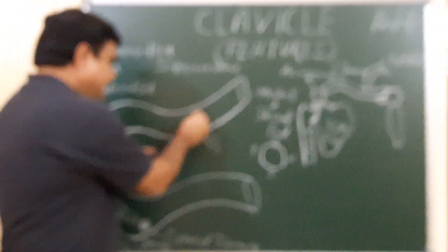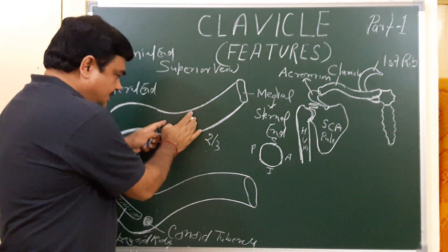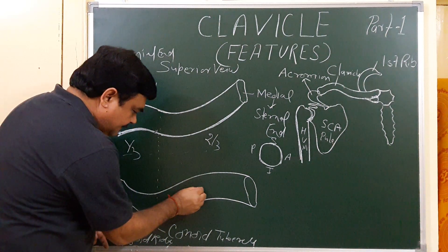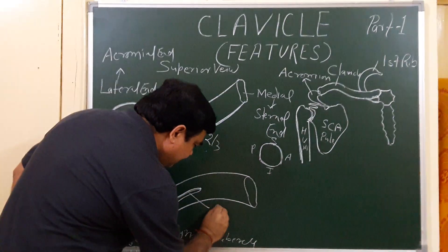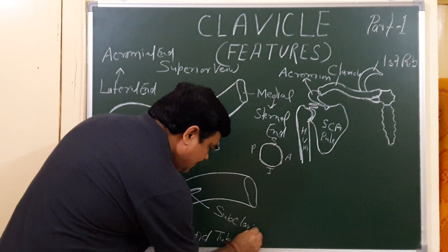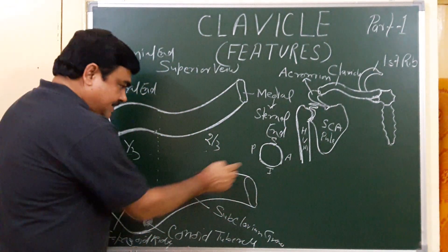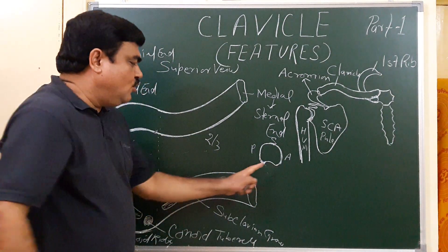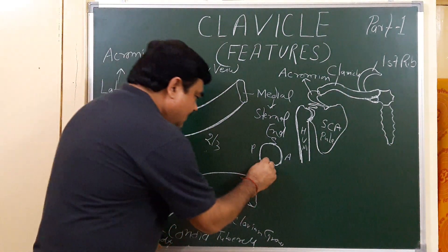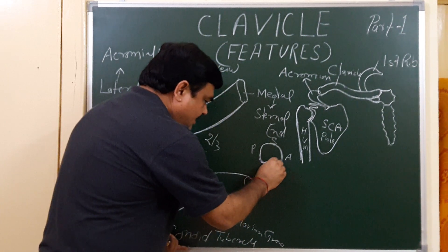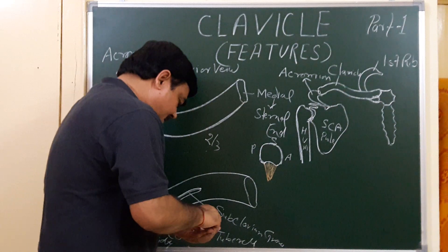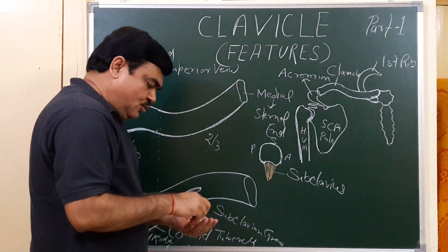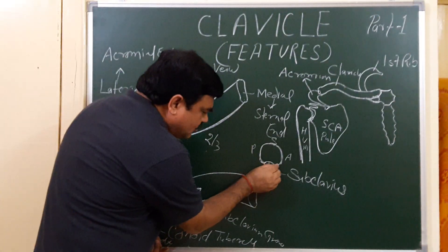The superior surface of the medial two-thirds is subcutaneous — you can feel it through the skin. On the inferior surface you can see a groove in the lateral part, known as the subclavian groove. In this groove there is the insertion of the subclavian muscle.